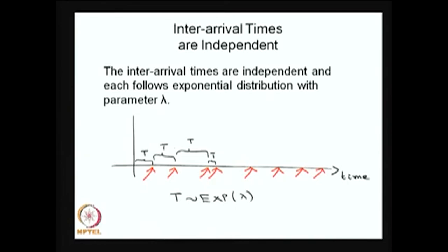The converse is also true: if the inter-arrival times are independent and each follows an exponential distribution with parameter λ, then the arrival process forms a Poisson process with parameter λ. In summary: arrival process is Poisson(λ) if and only if inter-arrival times are IID Exponential(λ).